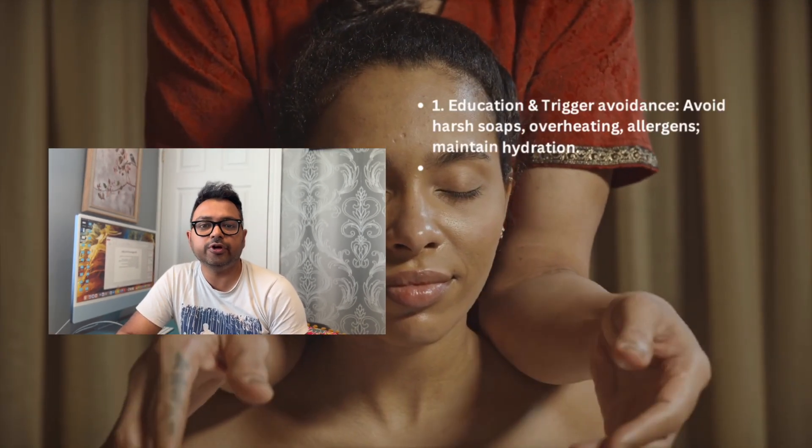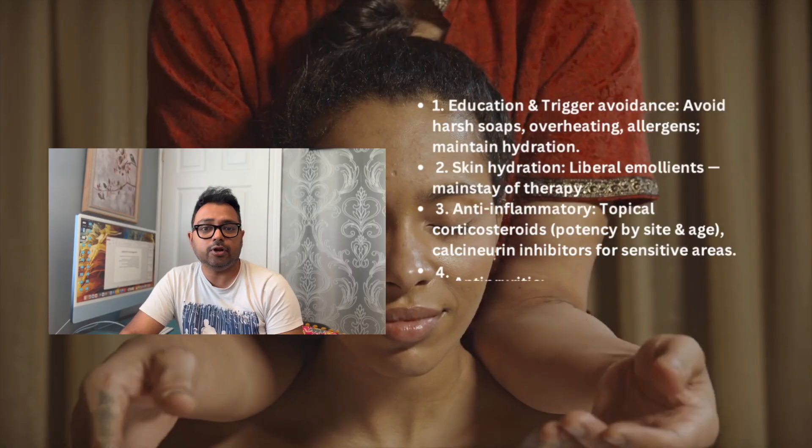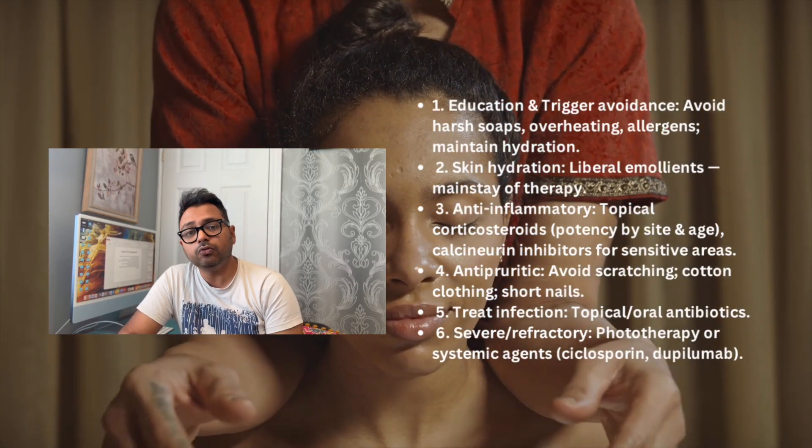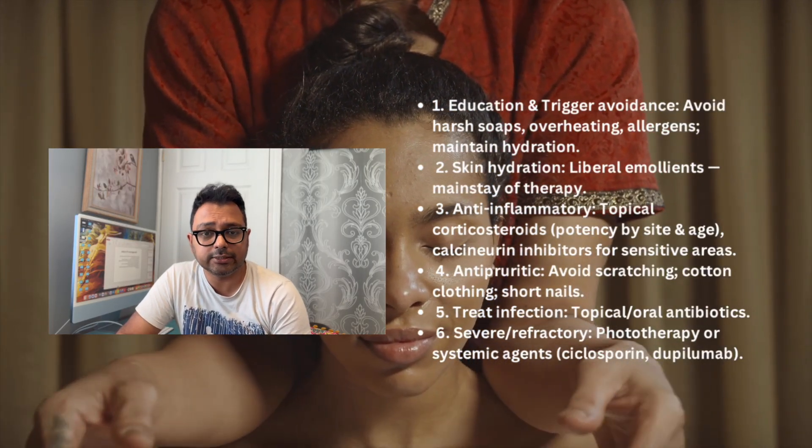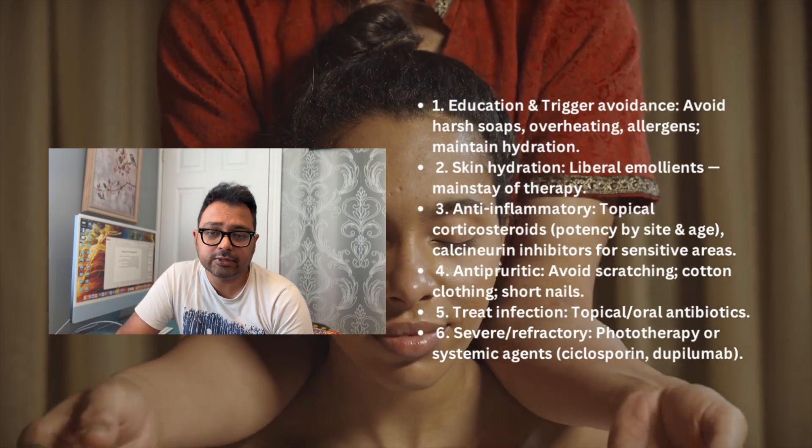How should we treat? First, educate the patient and avoid triggering factors like harsh detergents, allergen exposure, and ensure good hydration. Use emollients to keep the skin well hydrated. Third, for anti-inflammatory agents, we can use steroids, considering the potency and site of use. In sensitive areas, we can use calcineurin inhibitors. To reduce pruritus, advise avoiding scratching, keep nails cut short, and always wear cotton clothing.